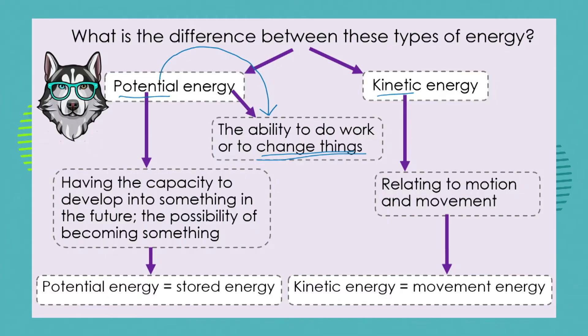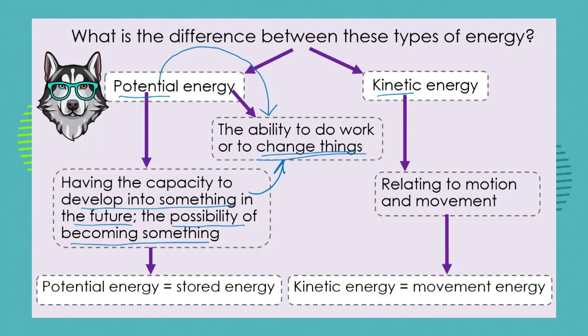In science, potential means having the capacity to develop into something in the future — the possibility of becoming something — and this translates into the possibility to do work. Remember our original definition of energy: energy means the ability to do work. So potential energy means the energy isn't working right now, but it has the possibility or the potential to do work sometime in the future, or if the circumstances change. Think about potential energy as a stored form of energy.